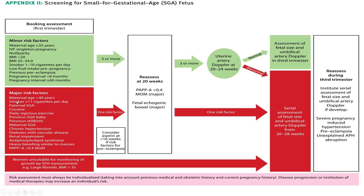Major risk factors include: maternal age more than 40, smoking ≥11 cigarettes per day, paternal small for gestational age, cocaine use, daily vigorous exercise, previous SGA baby, previous stillbirth, maternal SGA, chronic hypertension, diabetes with vascular disease, renal impairment, antiphospholipid antibody syndrome, heavy bleeding similar to menstruation, PAPP-A less than 0.4 multiples of the median, women unsuitable for monitoring by symphysio-fundal height — for example, large fibroids or BMI more than 35.